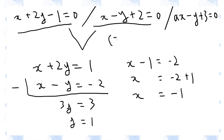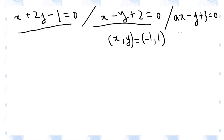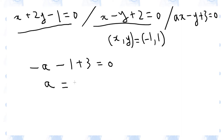So the coordinates of the point of intersection are found. We know that the third line also goes through this point of intersection. So we can substitute these values into the third equation to obtain the value of a. The answer is a equals 2.